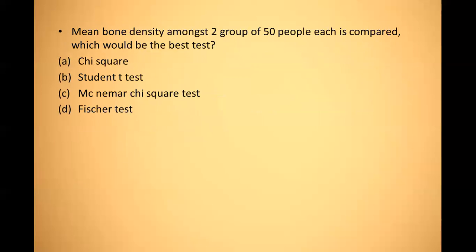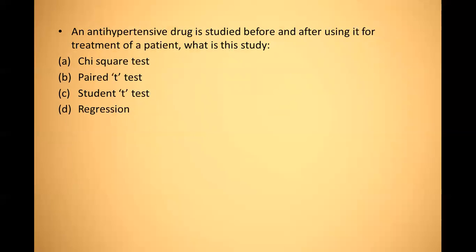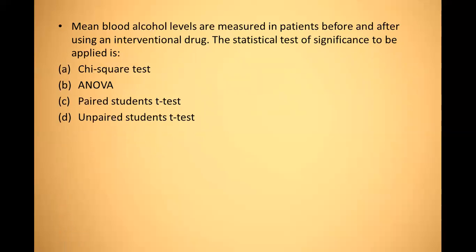Next: the mean bone density among two groups of 50 people each is compared — what is the best test? Two groups are present, so unpaired t-test is the best answer. Next: an antihypertensive drug is studied before and after treatment — paired t-test is the best option. Next: the mean blood alcohol level is measured before and after an interventional drug — the test of significance to be applied is the paired Student's t-test.